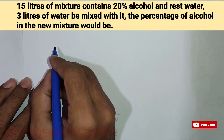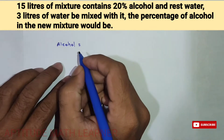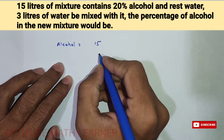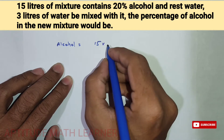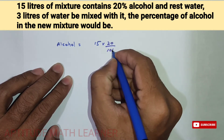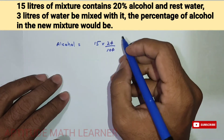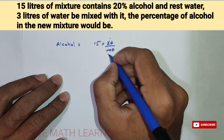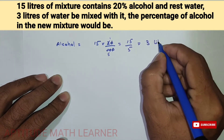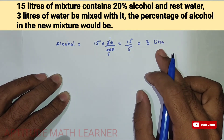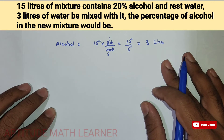The first thing we have to find is 20 percent of alcohol in 15 liters of mixture. So 20 percent is the alcohol — how many liters does that become? Let's find out: 20 percent of 15 liters. The zeros cancel, and we get 15 upon 5, which is 3. So three liters of alcohol is present in the 15-liter mixture.